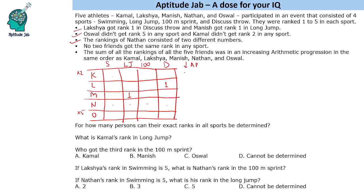Now we will try to find out what this AP will be and fill in the ranks. In all sports, ranks are 1 to 5, so the sum of 1+2+3+4+5 = 15, and there are 4 sports, making the total 60. So the total of all rank sums must also be 60.